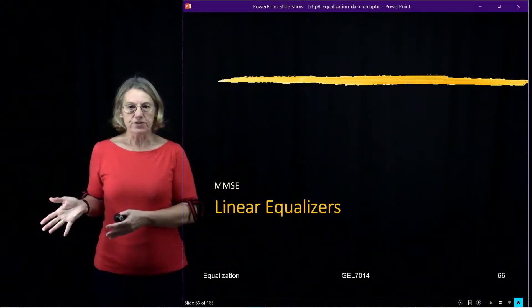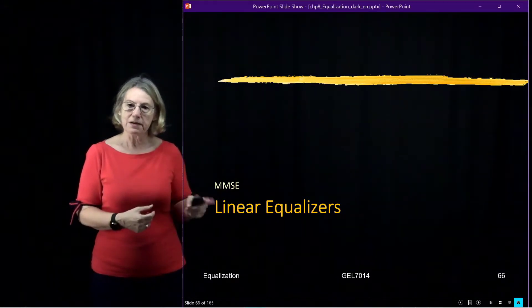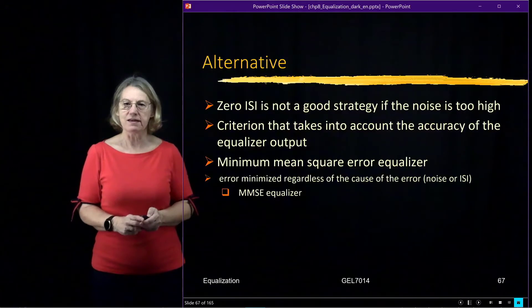So we've seen the zero-forcing equalizer, and now we're going to look at our second example of a linear equalizer, and that is the minimum mean squared error equalizer, MMSE equalizer.